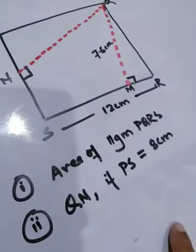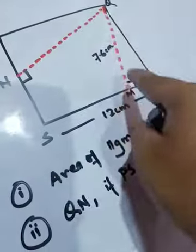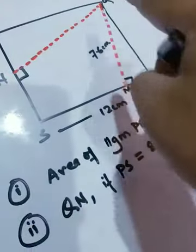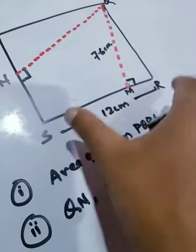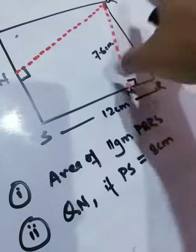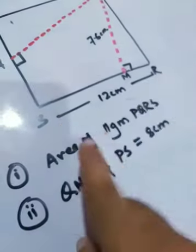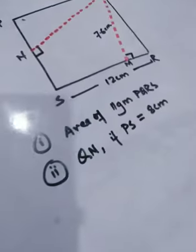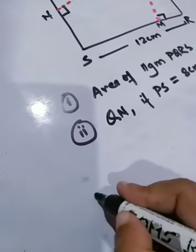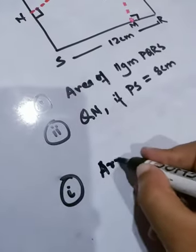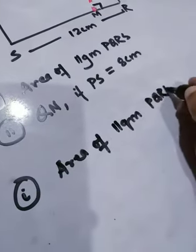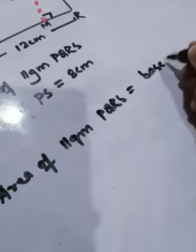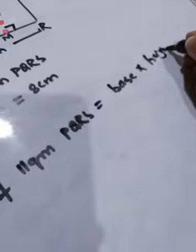As I have explained earlier, when you see a height inside a parallelogram, you have to identify which particular line segment the height is falling on. So QM is falling on SR — if this is the height, then SR would be the base. The first thing they are asking is to find the area of parallelogram PQRS. The formula is: area of parallelogram equals base into height.